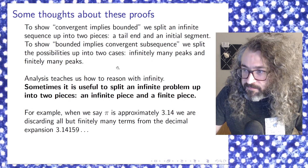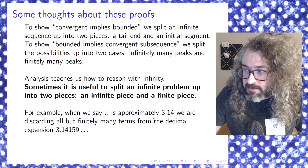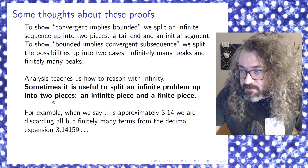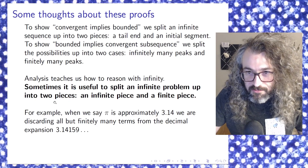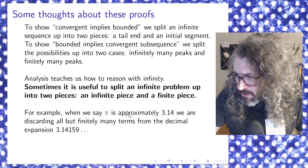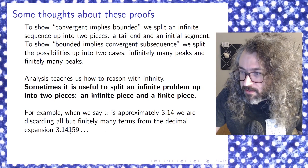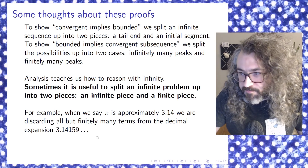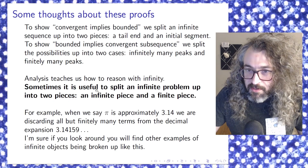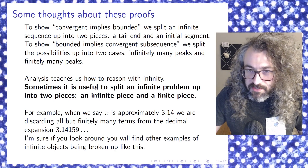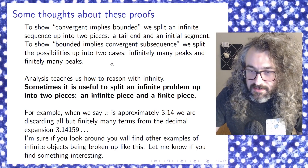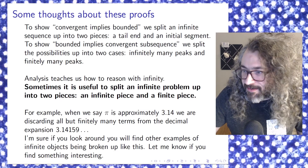For example, when we say that the real number pi is approximately 3.14, we're discarding all but finitely many terms from the decimal expansion 3.14159... So when you're making an approximation, you are cutting this number up into two pieces — an initial piece and an infinite piece that you know is negligible. I'm sure if you look around, you'll be able to find other examples of this where you're taking an infinite problem and splitting it up into these two pieces. If you find something like this and you want to let me know, please do — I find this kind of thing interesting.